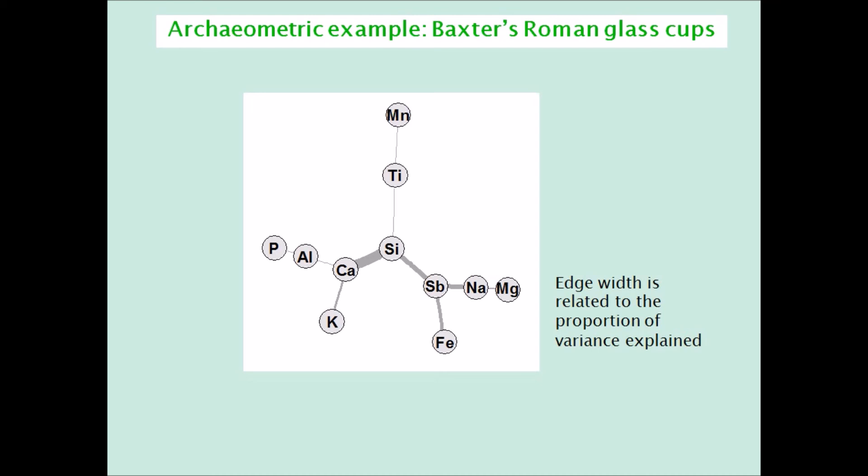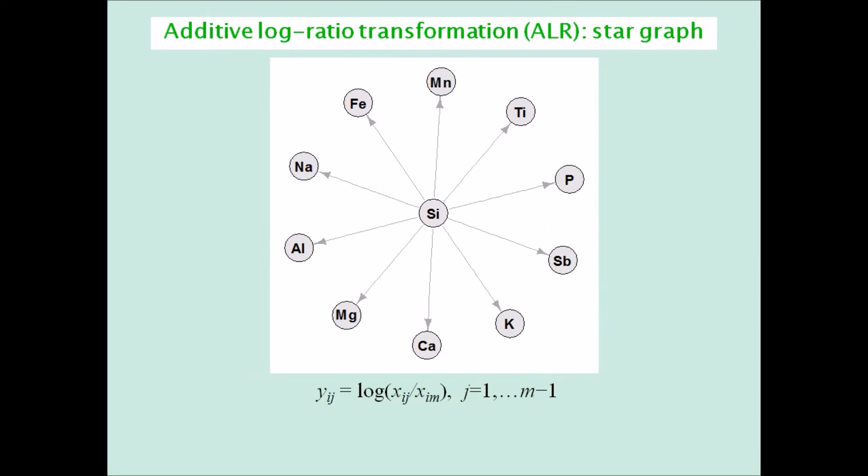And finally, a word about additive log ratio transformations, which have been neglected by the CoDA School, although they were John Aitchison's original idea. These make the star graph, and work perfectly well and are easy to interpret.